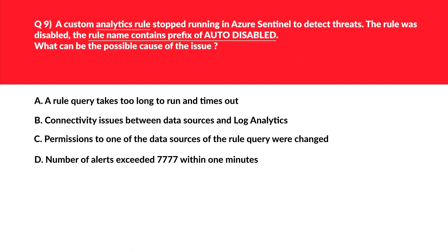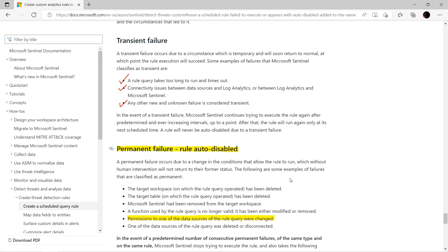This question is a quick refresher from the previous few questions about transient and permanent failures. We need to figure out permanent failure in this question, which should be the odd one out. Apart from option C — that is permissions to one of the data sources of the rule query were changed — the rest belong to the category of transient failures. Because if we look at option C, without human intervention it will not return to its former status. We will keep option C and reject the rest. You need to be familiar with transient and permanent failure as it's included in the latest syllabus.